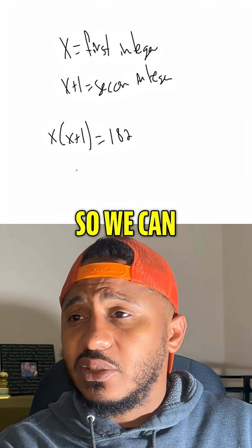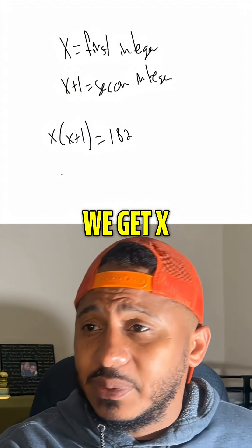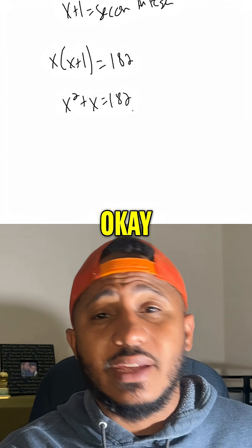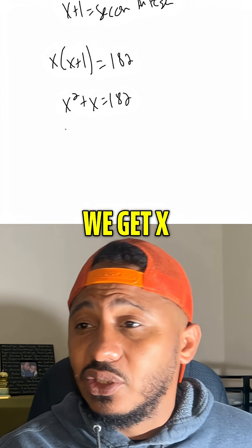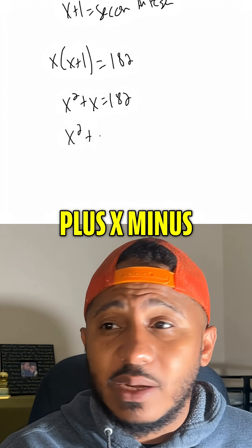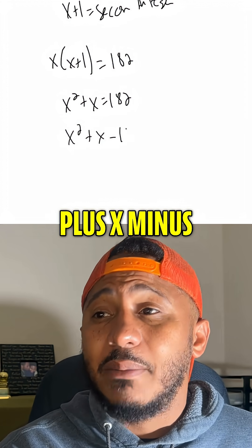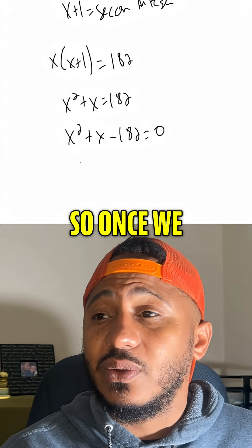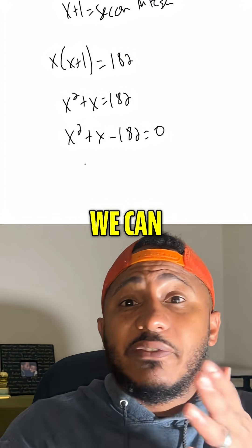Now we're solving this quadratic, so we can distribute the x — we get x squared plus x equals 182. Subtracting 182, we get x squared plus x minus 182 equals 0. So once we have 0 on one side,